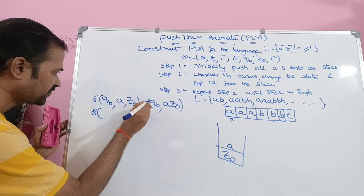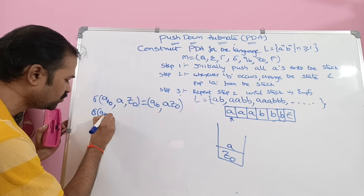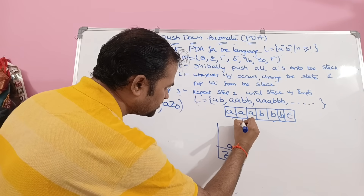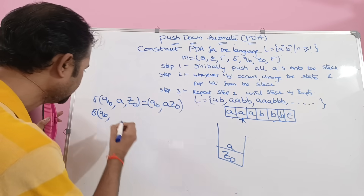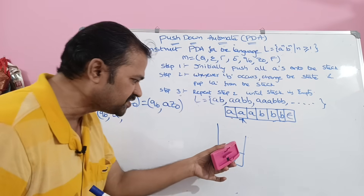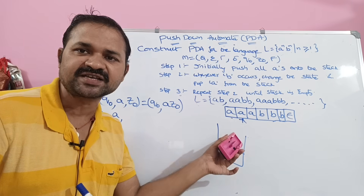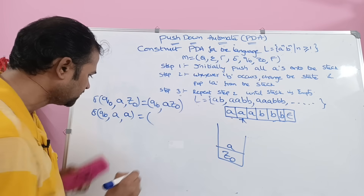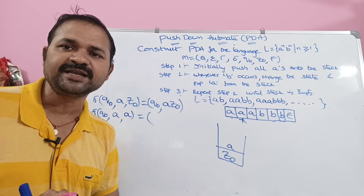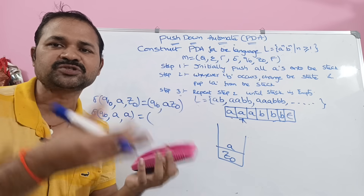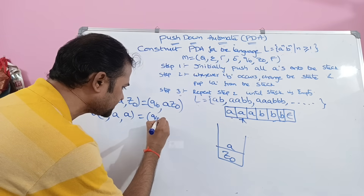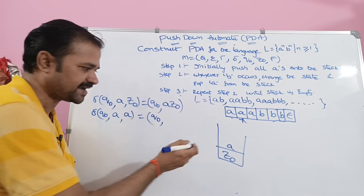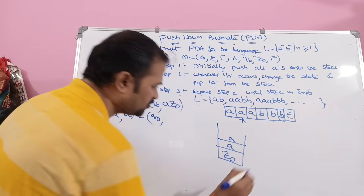Next, delta of q0 comma A comma A. The state is q0, next input symbol is A, and the top of the stack is A. If the input symbol is A, we simply push that symbol onto the stack — no need to change state. So q0 comma A A. Now we push this A onto the stack, and the stack contains A, A, Z0.